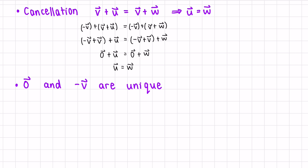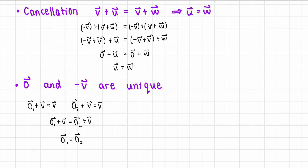Another property is that the zero vector is unique. The zero vector has the property that zero plus v equals v — it does nothing. Since we're trying to show it's unique, let's write zero vector one and zero vector two. We can equate zero vector one plus v equals zero vector two plus v, and by the cancellation law, the two zero vectors are equal, so the zero vector is unique.